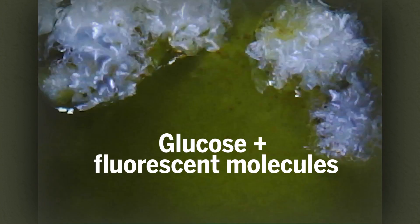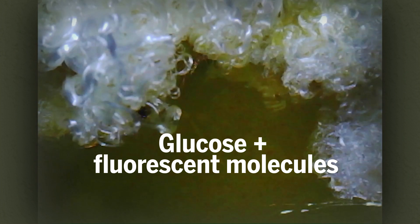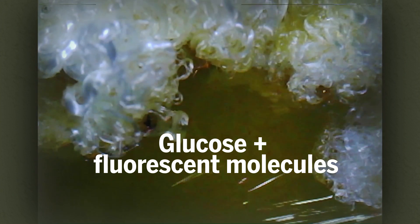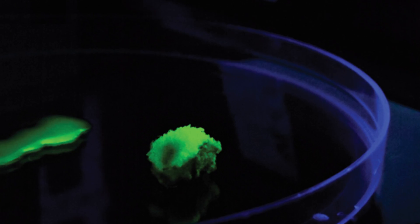In one example, the researchers linked fluorescent molecules to the sugars. After 20 days of growth, the fibers appear yellow under normal light. But when exposed to UV light, they glow a brilliant green.